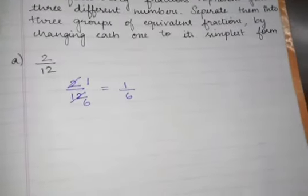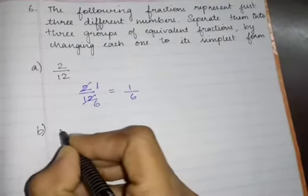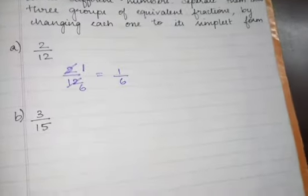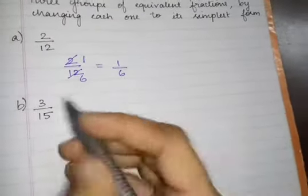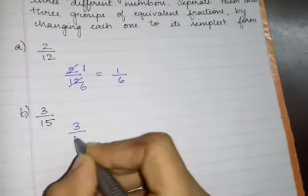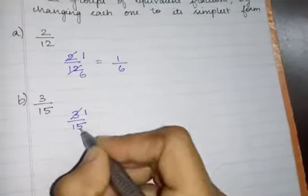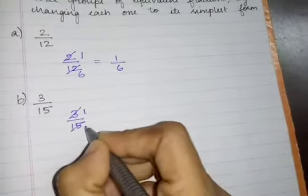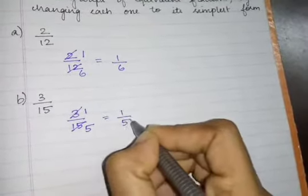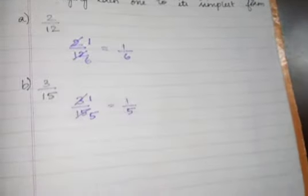Next, what is the B problem? 3 by 15. What is the simplest form of 3 by 15? It comes in the 3rd table: 3 ones are 3, 3 fives are 15. So 1 by 5 is the simplest form of 3 by 15.